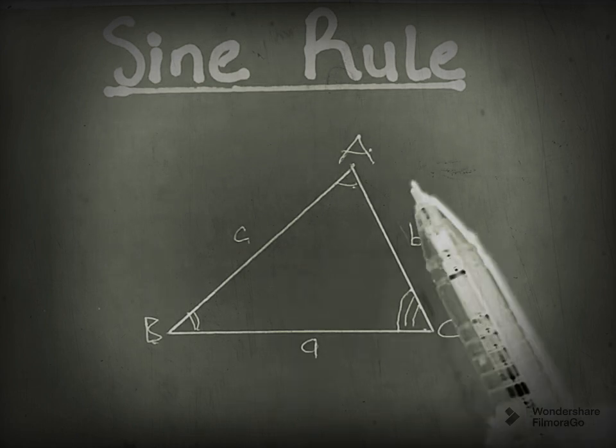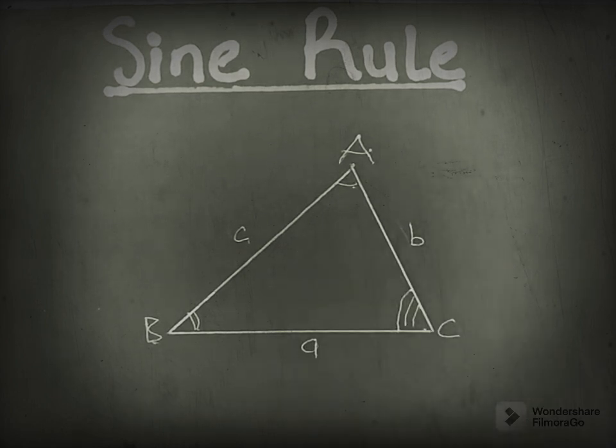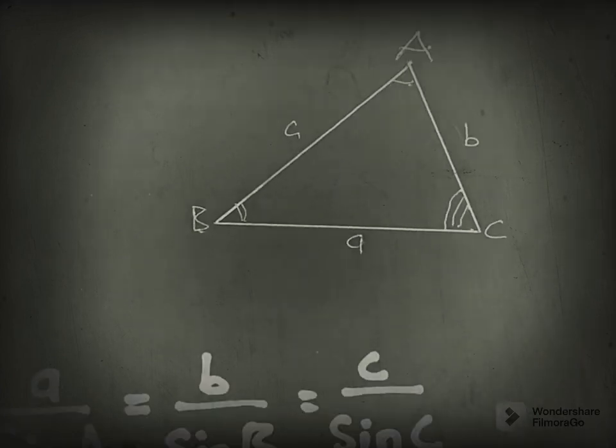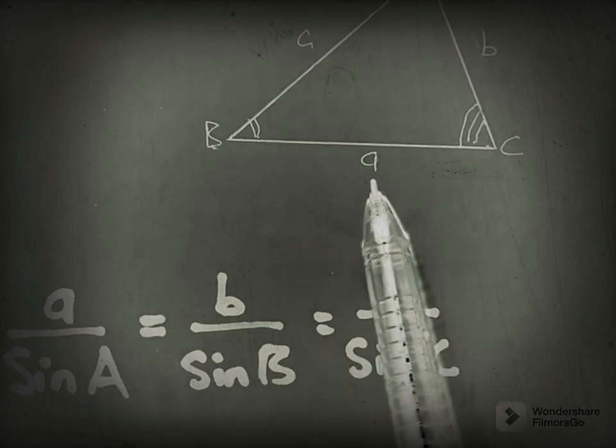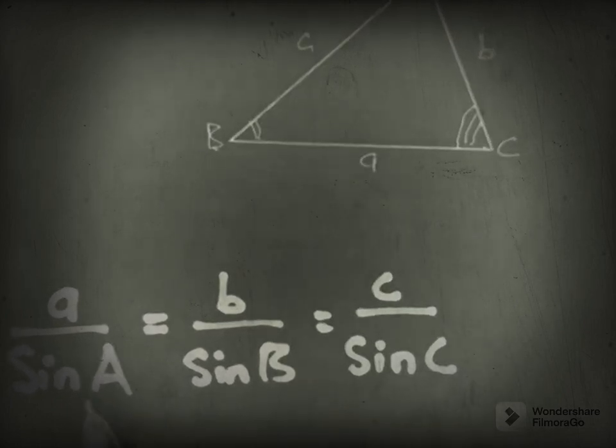Now, sine rule helps us to create a relationship where we could find the angle or side. So this is the formula. In sine rule, we say a over sin A is the same thing as b over sin B is the same thing as c over sin C. So let's take a look at a quick problem.